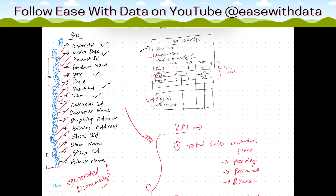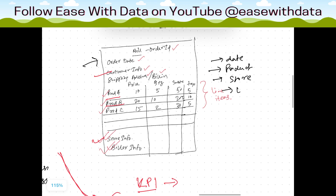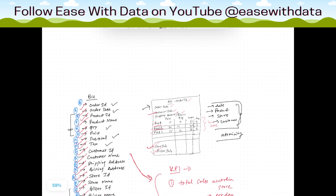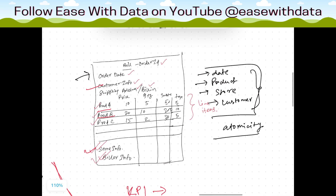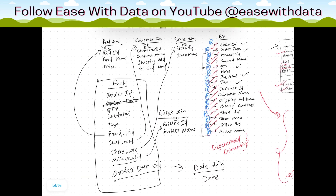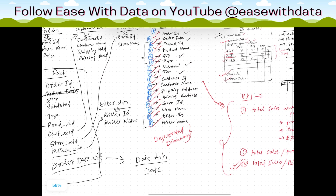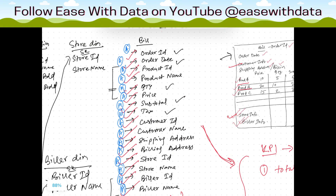The only remaining point is what is the grain. The grain for this table is at the level of date, product, store, and customer — this is the lowest level of atomicity. So the grain is per day, per product, per store, and per customer. Each line item will have one product, one store, one customer, and one date. This is the simplest fact and dimension design. In the next sessions, we'll look at different types of facts and different types of dimensions.